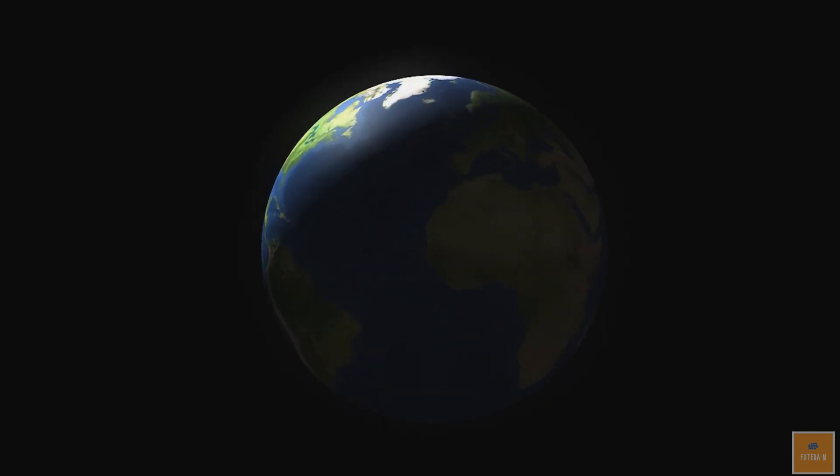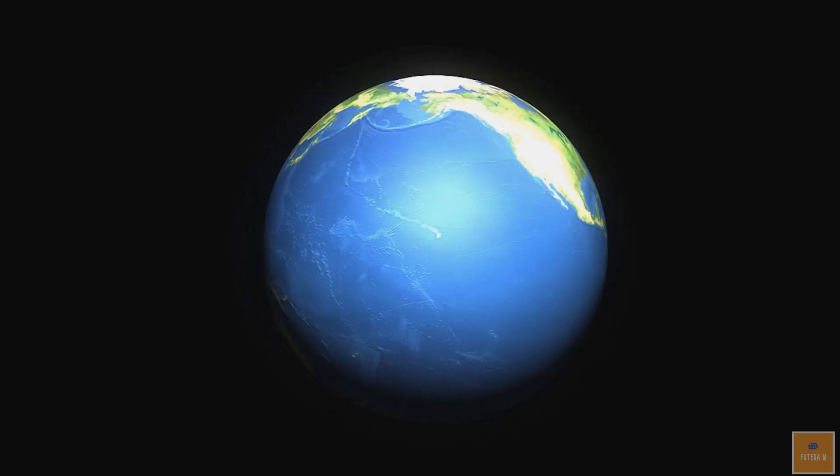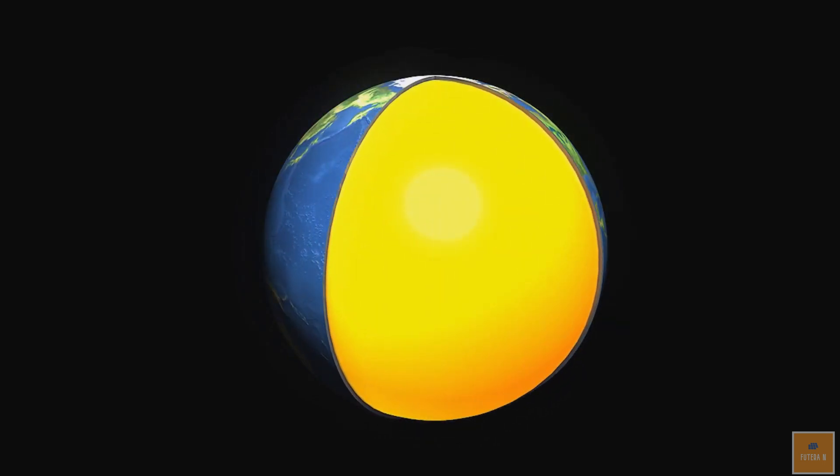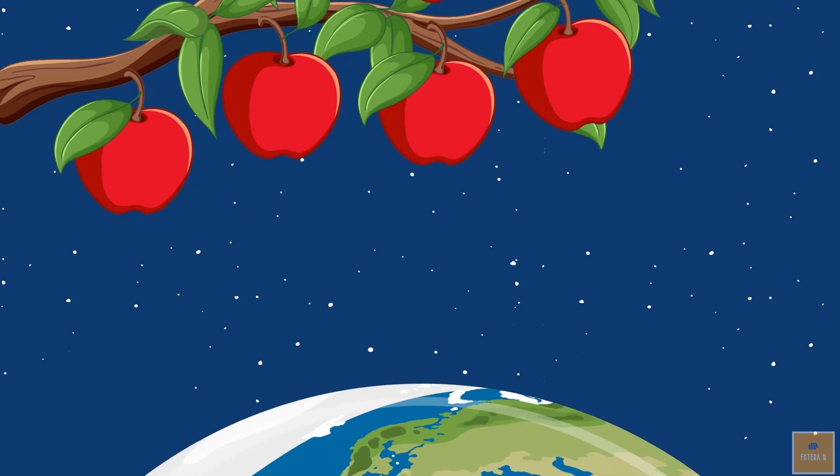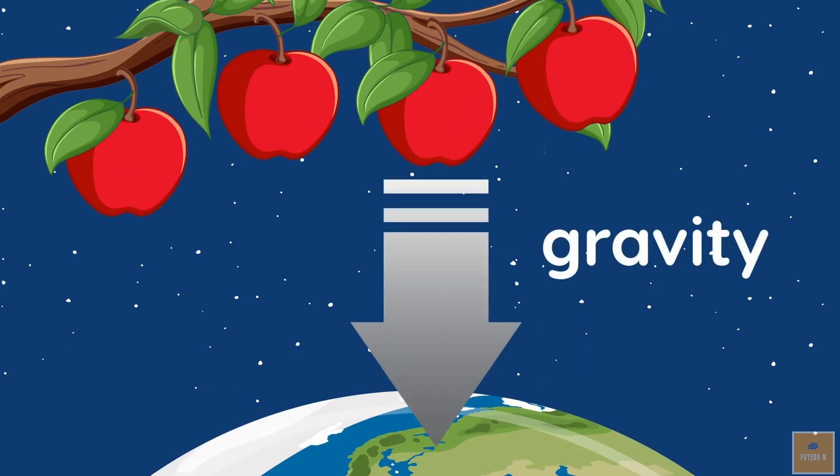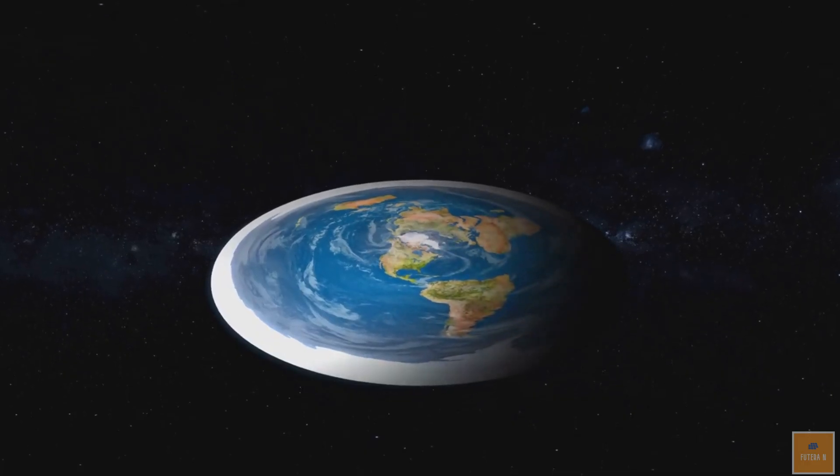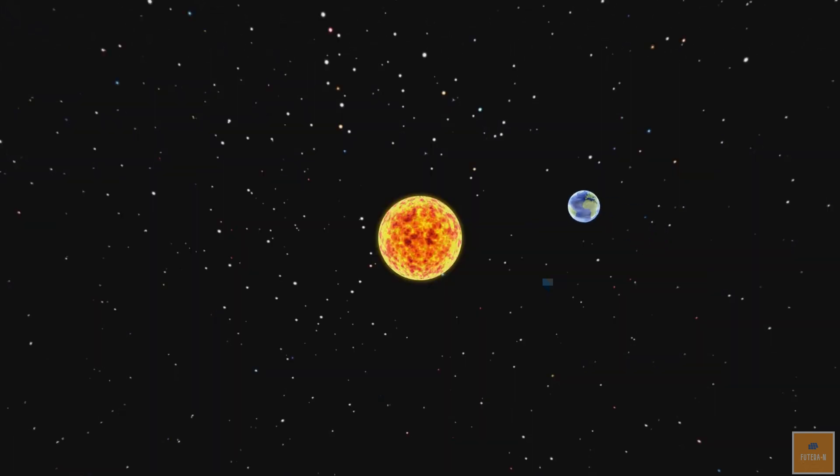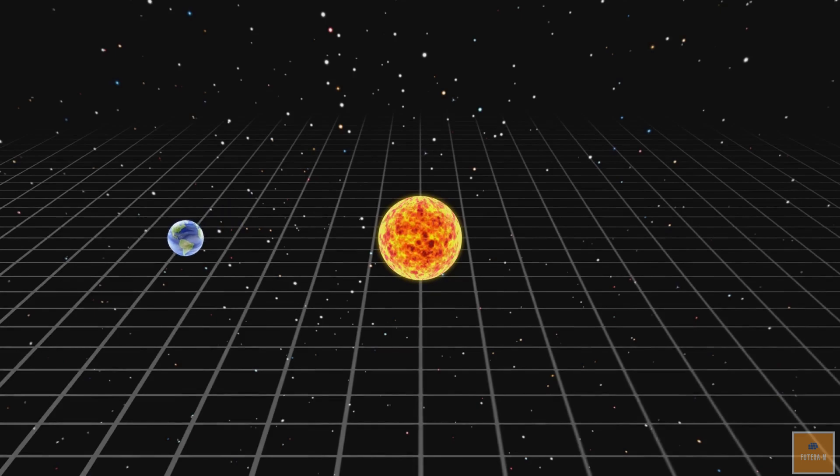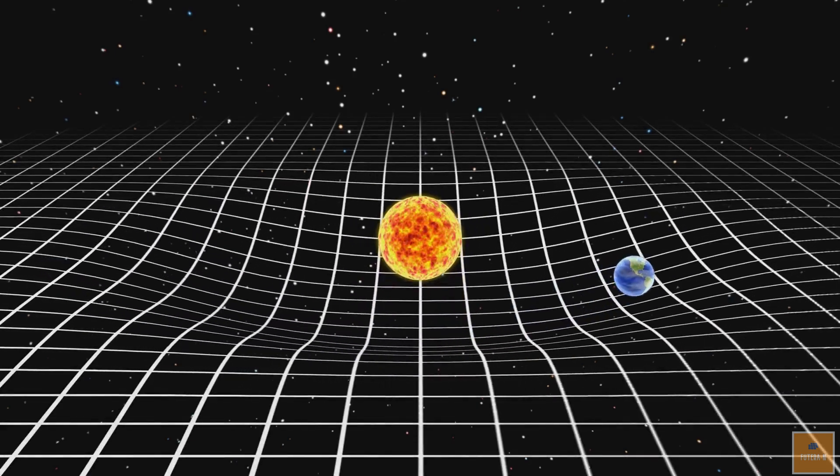If a hole were to be drilled through the Earth, the varying densities and compositions of the layers would cause changes in the speed and direction of the drill bit. The gravitational force exerted by the Earth is strongest at its surface and decreases as one moves away from the planet. As a result, the force experienced by an object at the center of the Earth would be zero. However, the object would still experience the gravitational forces of all the material surrounding it.